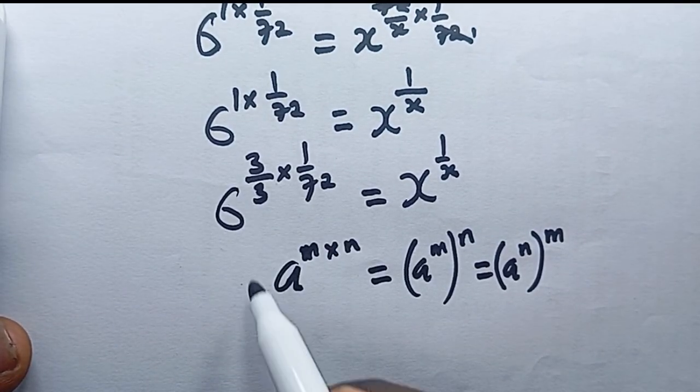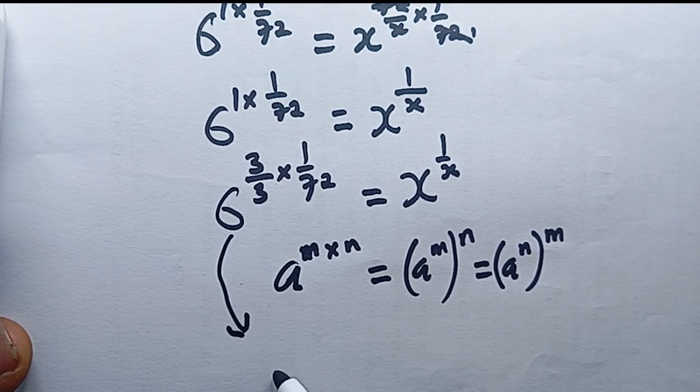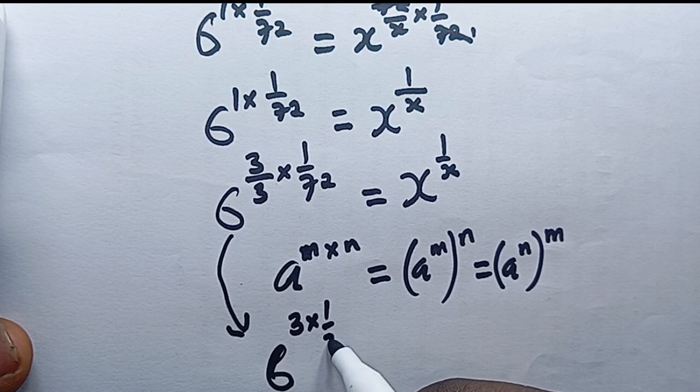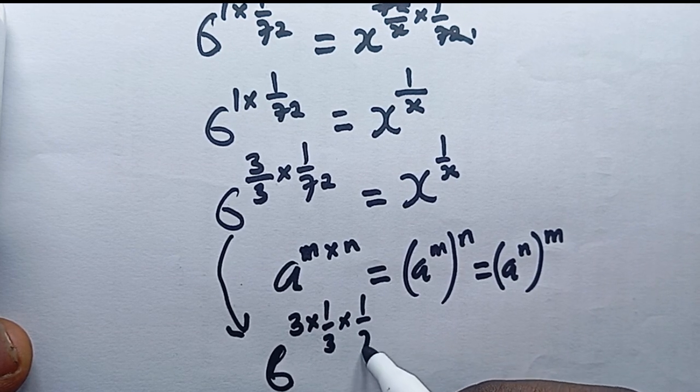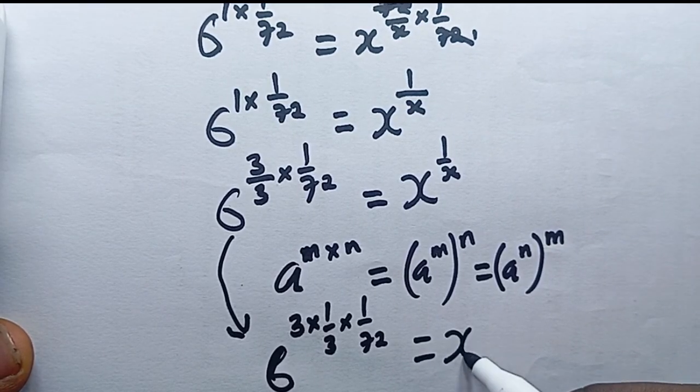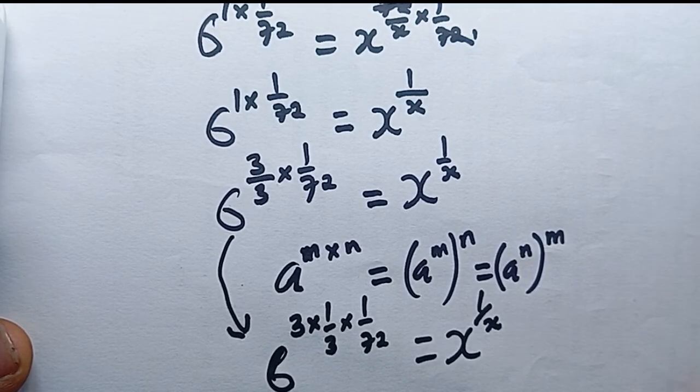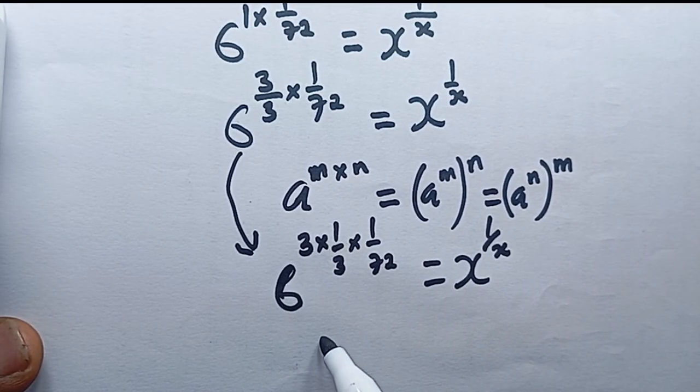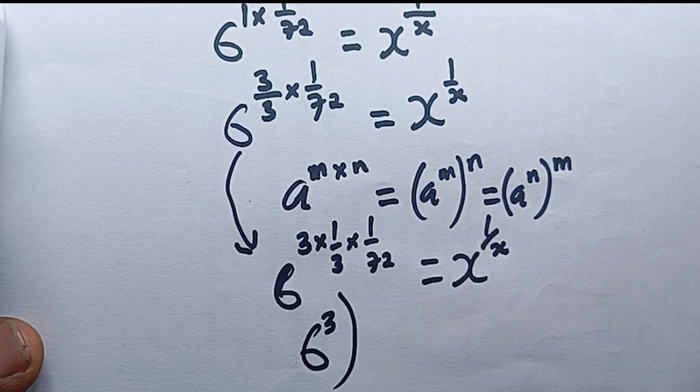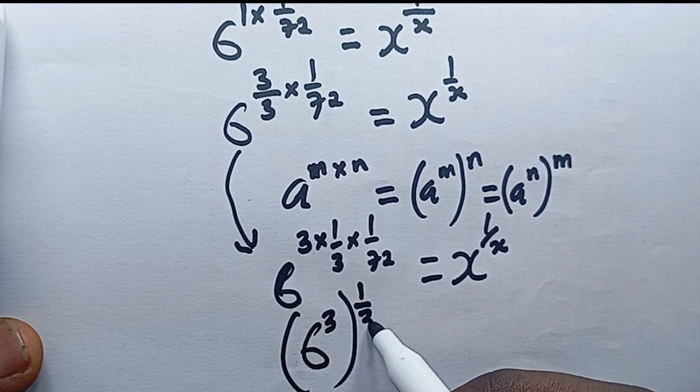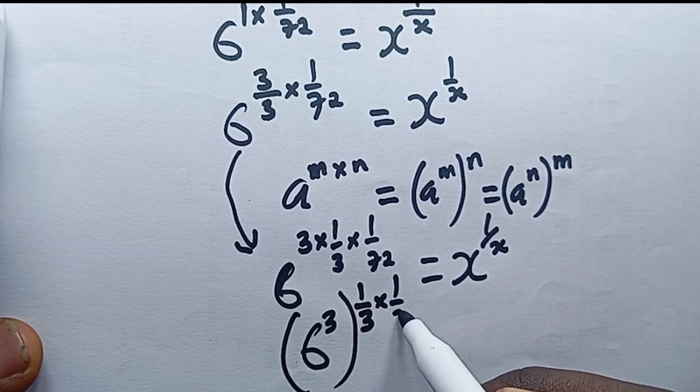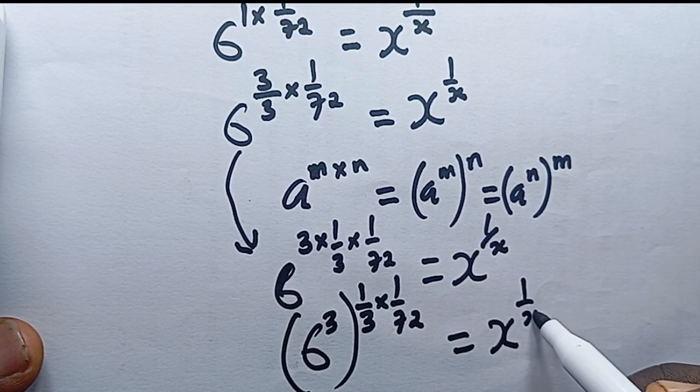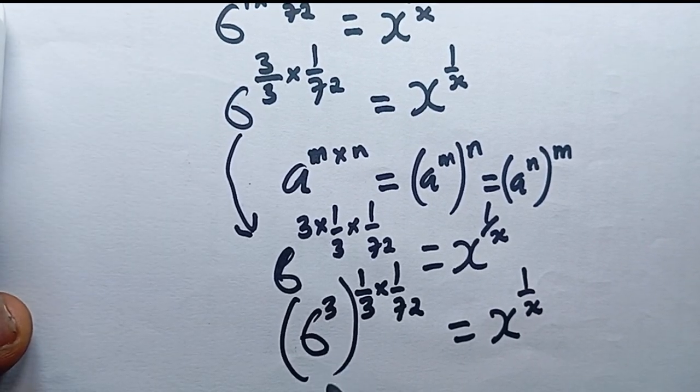I'm going to apply that here. I can write this as 6 power 3 multiplied by 1 over 3 multiplied by 1 over 72, which is still equal to x power 1 over x. I'm going to put this in parenthesis, so I have 6 power 3 and then the other ones outside.